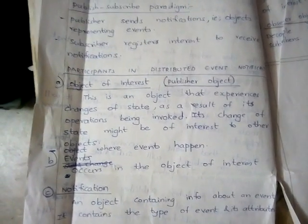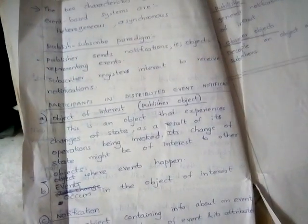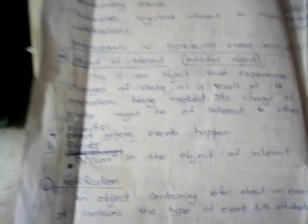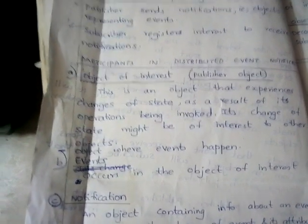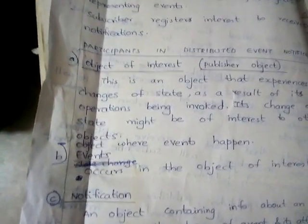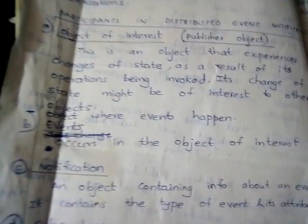The main participants in distributed event notifications are mainly five to six: first, object of interest or publisher; second, events; third, notification; fourth, subscriber; fifth, publisher; and sixth, observer objects. The object of interest is an object that experiences a change of state as a result of its operations being invoked. Its change of state might be of interest to other objects — simply, it is the object where events happen, also known as the publisher. Events occur in the object of interest or are created by the publisher.